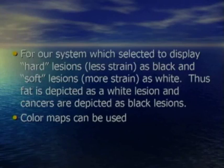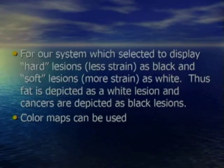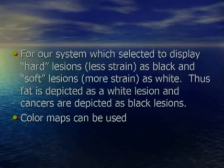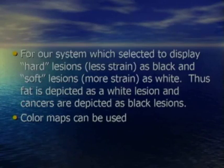For our system, we select to display hard lesions (less strain) as black and soft lesions (more strain) as white. Thus in general, fat will be depicted as white and cancers as black. Color maps are available, but my personal preference is to use black and white for compression elastography because it's a relative technique. When we talk about shear wave imaging with absolute numbers, color can be very useful in providing an easy way to interpret images.